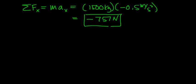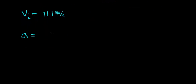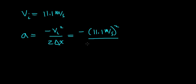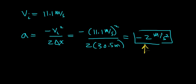An interesting follow-up question: what happens if the initial velocity is doubled? If v_initial is 11.1 meters per second instead of 5.55, and we stop the car over the same 30.5 meters, the acceleration equals negative 11.1 meters per second squared divided by 2 times 30.5 meters, giving negative 2 meters per second squared. This acceleration is 4 times the original — so doubling the velocity quadruples the required acceleration to bring the object to a stop, and consequently quadruples the force required to stop the car.